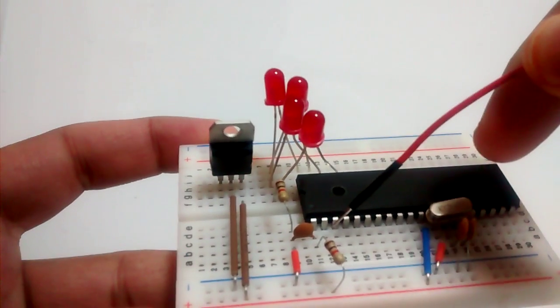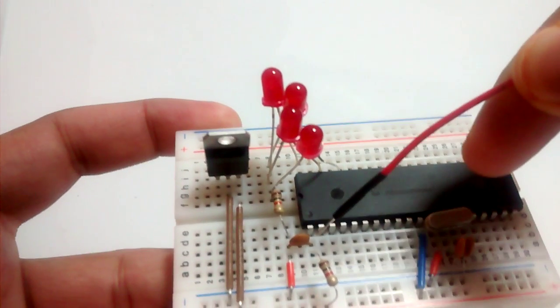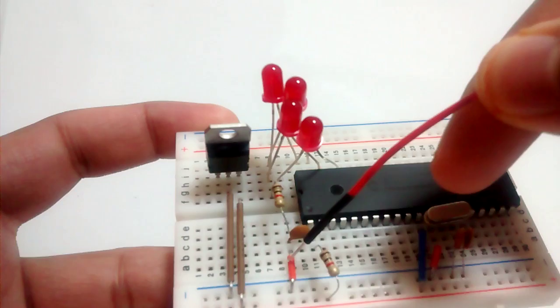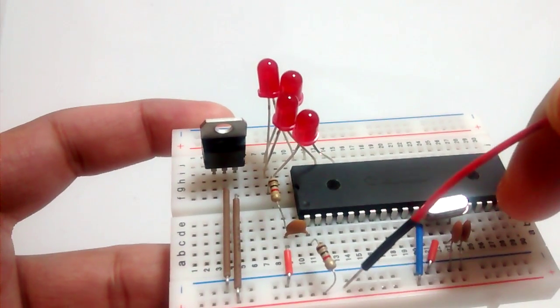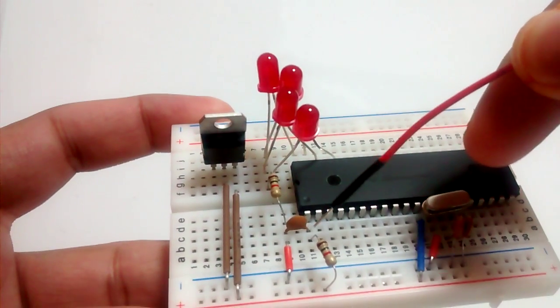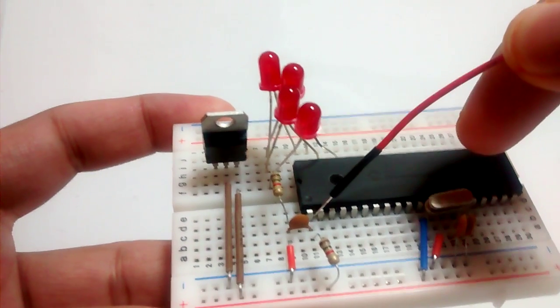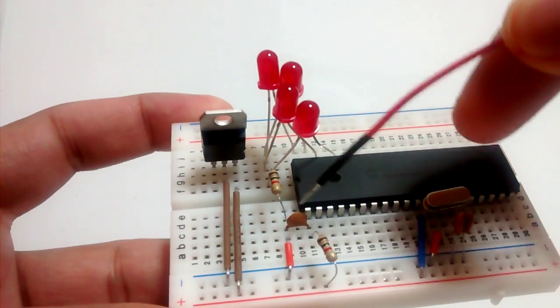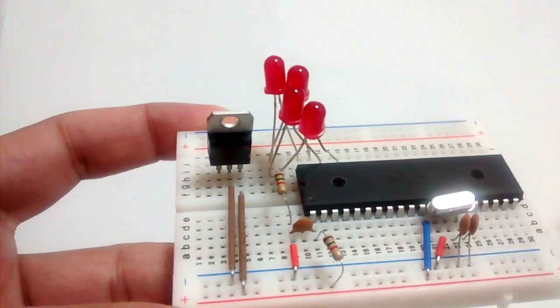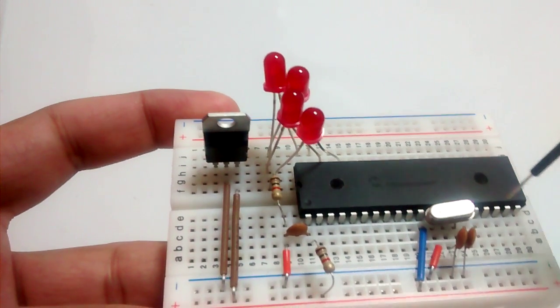One end of the capacitance is connected to pin number 1 and the other end is connected to the negative. So basically, from the power row I have a 1k ohm resistance going to pin number 1, and I have a capacitance across pin number 1.